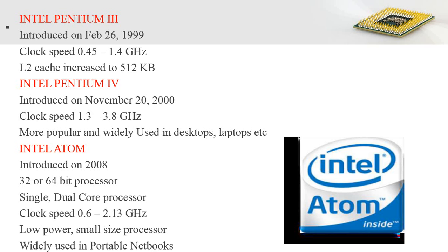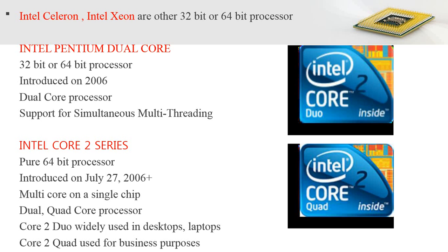In 2008, Intel introduced the Atom processor, a 32 or 64-bit processor available as a single or dual-core processor. A dual-core processor contains two processing units on a single chip that can operate independently to support multi-threading and increase performance. The Atom had a clock speed of 0.6 to 2.13 GHz, was low power consuming and small in size, making it widely used in portable notebooks.